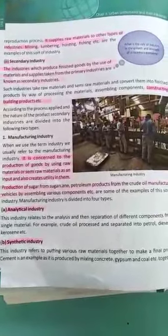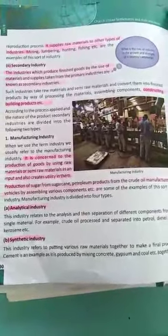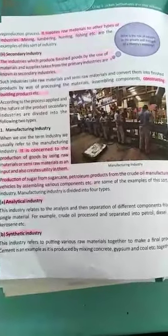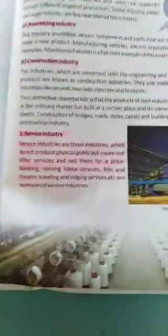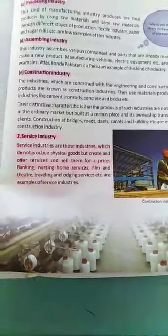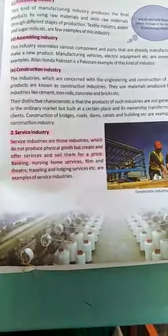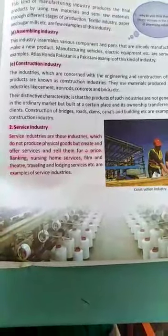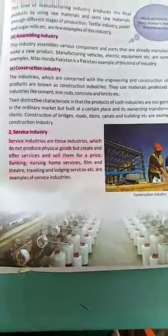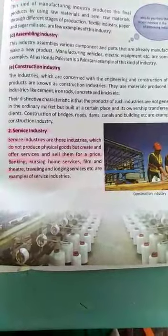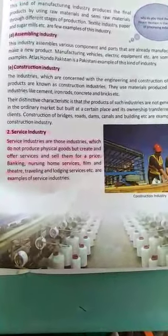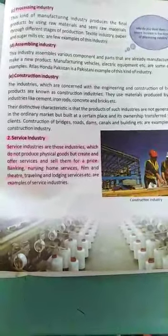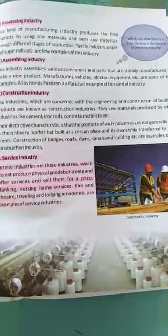Constructing building products are examples of secondary industries. Next, service industries are those industries that do not produce physical goods but create and offer services and sell them for a price. Banking, nursing home services, film and theater, traveling, and lodging services are examples of service industries.